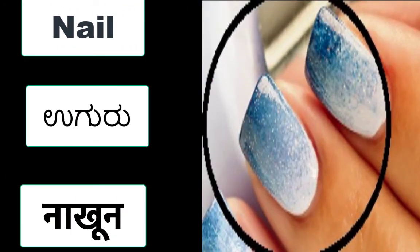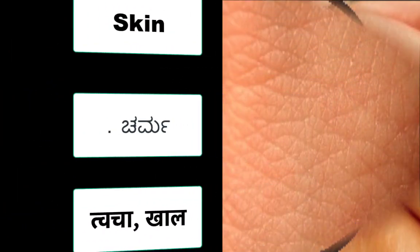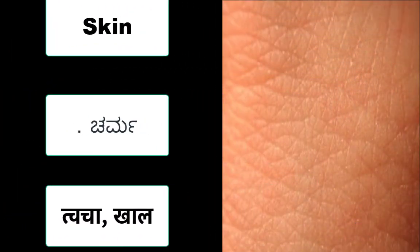In English, this is called as nail. In Kannada, it is uguru. And in Hindi, it is called nakhoon. In English, this is called as skin. In Kannada, it is charma. And in Hindi, it is called twacha ya khaal.